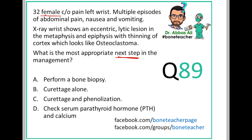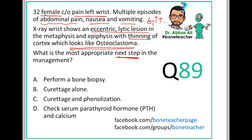So here is a female with pain in the wrist, multiple episodes of abdominal pain, nausea and vomiting — GI tract symptoms — along with an eccentric lytic lesion with thinning of cortex that looks like osteoclastoma. The options are: A) Perform biopsy, B) Curettage alone, C) Curettage and phenolization, and D) Check serum parathyroid hormone and calcium.